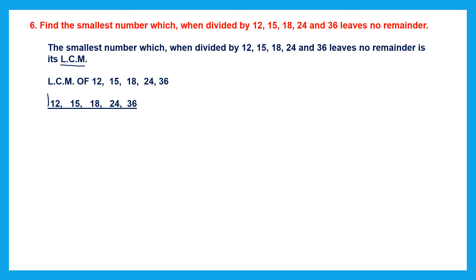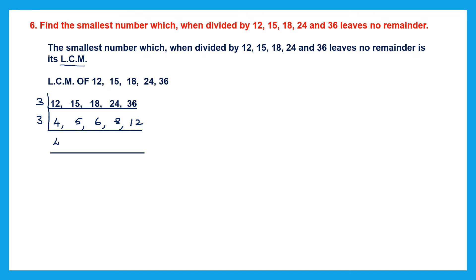So we have the numbers here. Let's divide by 3. 3 fours are 12, 3 fives are 15, 3 sixes are 18, 3 eights are 24, and 3 twelves are 36. Continue with 3 again: bring down 4 — not divisible; 5 — not divisible; 6 divided by 3 gives 2; 8 — not divisible; 12 divided by 3 gives 4.